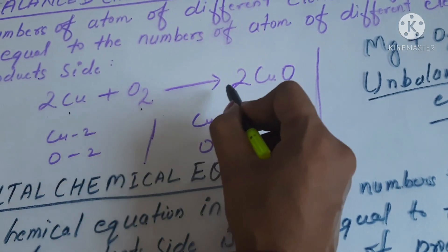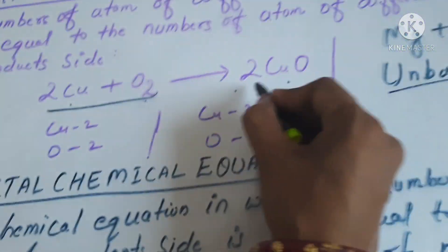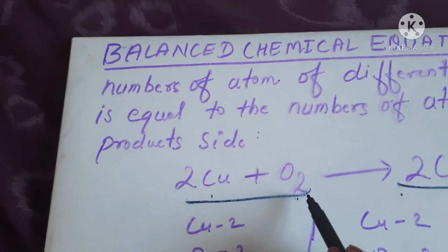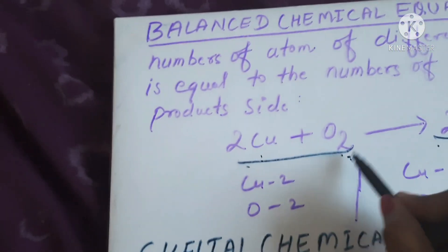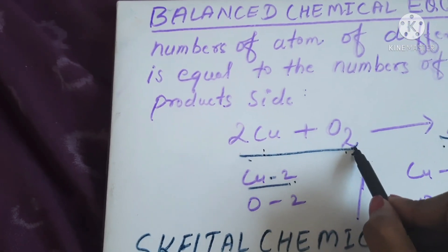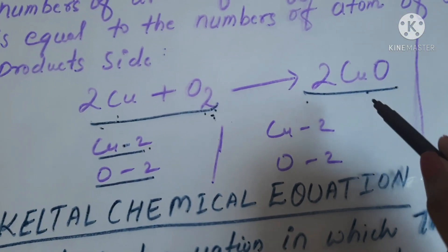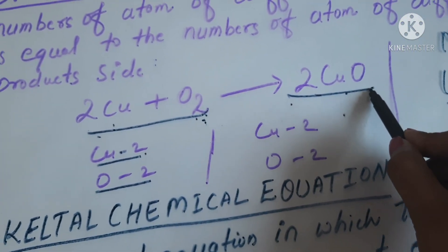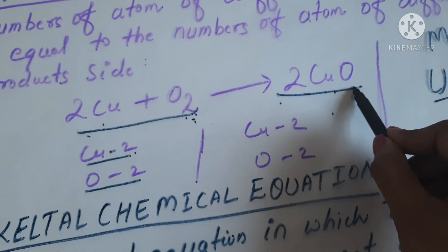Copper reacts with oxygen to form copper oxide. This one is the reactant side and this one is the product side. There are two different elements in the reactant side — first one is copper and second one is oxygen. In the reactant side, there are two atoms of copper. In the product side, copper oxide is a compound, having elements copper and oxygen.